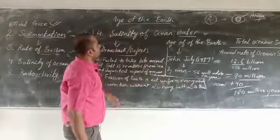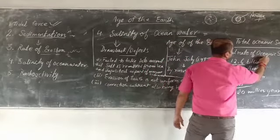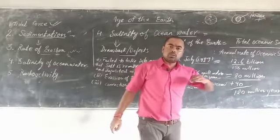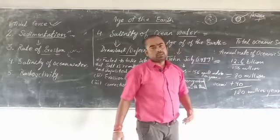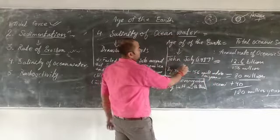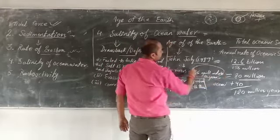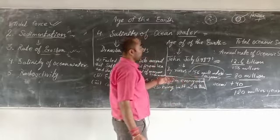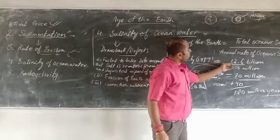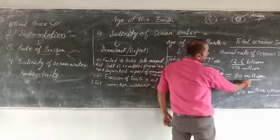The method for calculating age using salinity is: age of the earth equals total oceanic salt divided by the annual rate of oceanic salinity increase. In the year 1899, John Jolly calculated that 156 million metric tons of saline deposits are added to ocean water per year. Calculating 126 million total oceanic salt divided by 156 million, this ratio gives us 80 million years.